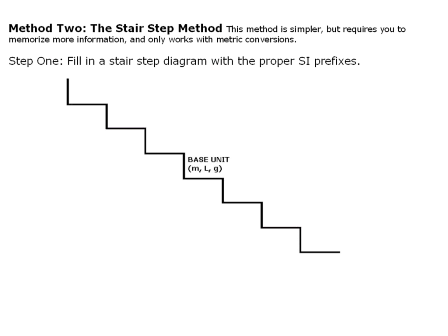If you wanted to use this method, you would need to know the base units between kilo and milli, and those going up from the base unit would be deca. That means 10 of the base unit. Hecto means 100 of the base unit. And kilo means 1,000 of the base unit.